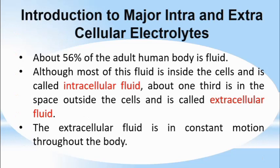About 56% of the adult human body is made up of fluid. Although most of this fluid is inside the cells and is called intracellular fluid, about one third is in the space outside the cell and that is called extracellular fluid. So there are two types of fluids depending on where they are present.